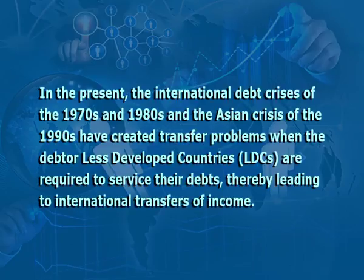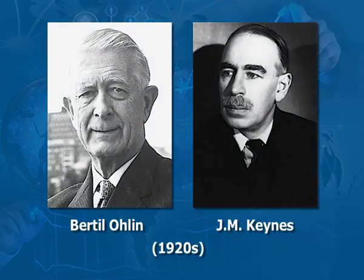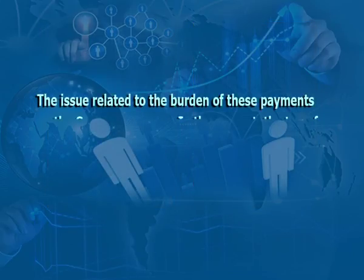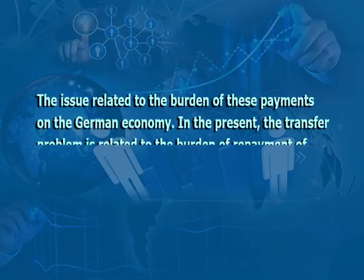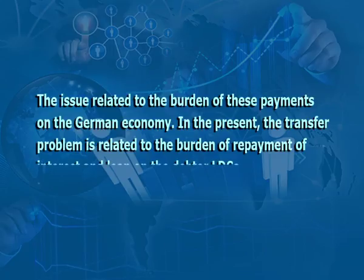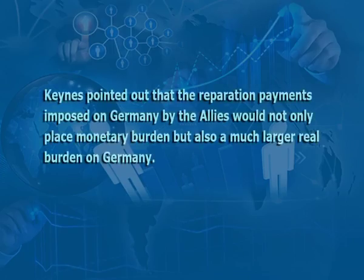In the present, the international debt crisis of the 1970s and 1980s and the Asian crisis of the 1990s have created transfer problems when the debtor less developed countries are required to service their debts, thereby leading to international transfers of income. The transfer problem was a subject of controversy in the 1920s between two famous economists, Bertil Ohlin and John Maynard Keynes, over the reparation payments demanded of Germany by the allies after World War One. The issue related to the burden of these payments on the German economy.